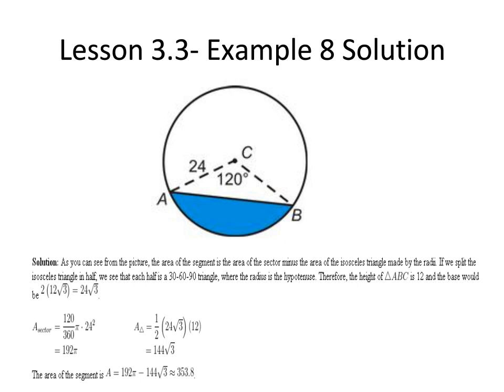The area of the triangle equation is 1 half times 24 times the square root of 3 times 12, which makes the area of the triangle equal 144 times the square root of 3.